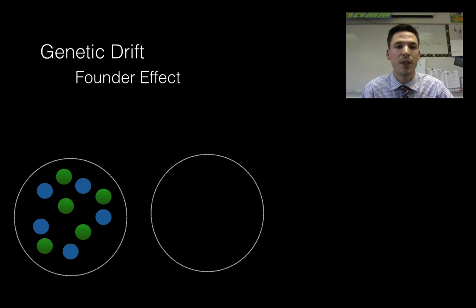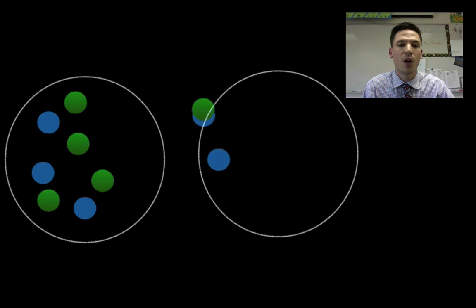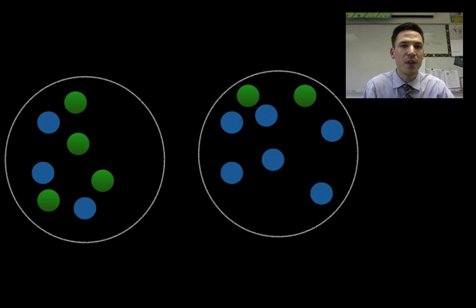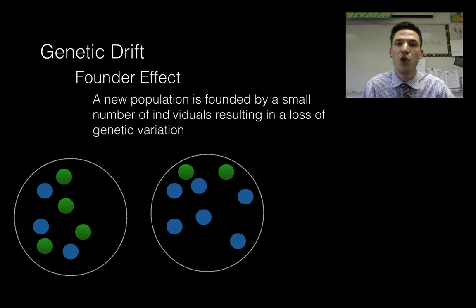Another way we can get genetic drift to happen is through something known as the founder effect. If we think about what the term founder means, who's the founder of Facebook? Mark Zuckerberg. He's the person that started the company. So the founder effect is when we have our population of greens and blues here. Let's say a small amount of them are the founders of a new population for whatever reason. Maybe they got separated. Maybe they decided to leave and start a new colony. So now my new population here, when they reproduce, looks nothing like the original. Now I have more blues than greens. This was not because blues were more adapted. The founder effect is going to be when a new population is started or founded by a small number of individuals, resulting in a loss of genetic variation.